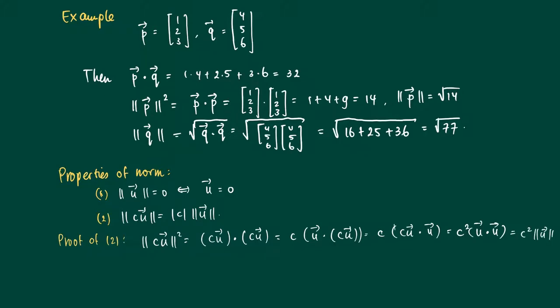If we take the square root on the left-hand side and the right-hand side, we get that the length of c times u is the square root of c squared times the length of u squared. We know that the square root of a constant squared equals the absolute value of that constant c times the length of u.